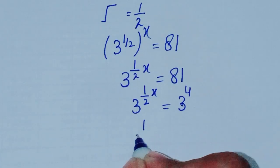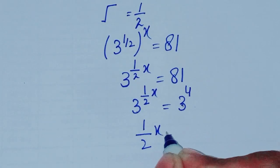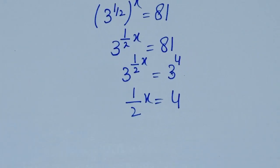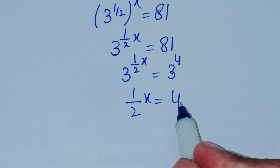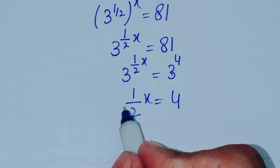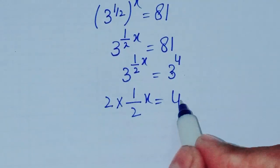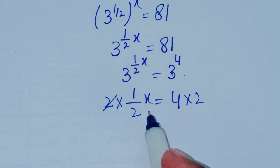So we can write it as 1/2x = 4. We have to find x, so multiply by 2 on both sides. 2 and 2 cancel each other.